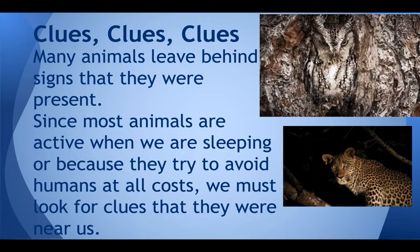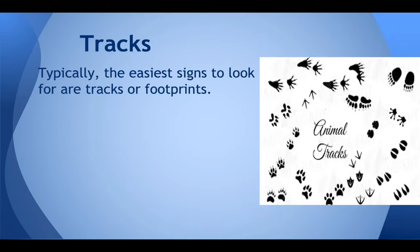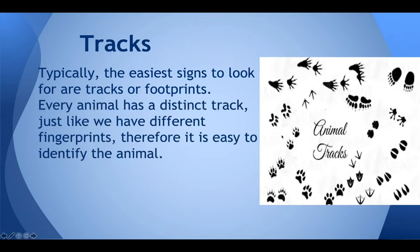The most common method of telling that animals are near us is by the tracks they leave behind — if they're an animal that doesn't fly, of course. It's harder to track animals that do fly, or fish or anything that swims. Every animal has a distinct track, just like we have different fingerprints, so it's easy for us to identify the animal.